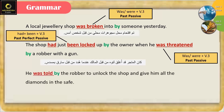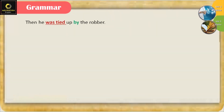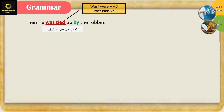'He was told by the robber to unlock the shop and give him all the diamonds in the safe.' Was told — was زائد الفعل بالتصريف الثالث — past passive. 'Then he was tied up by the robber.' Was زائد الفعل بالتصريف الثالث — past passive.